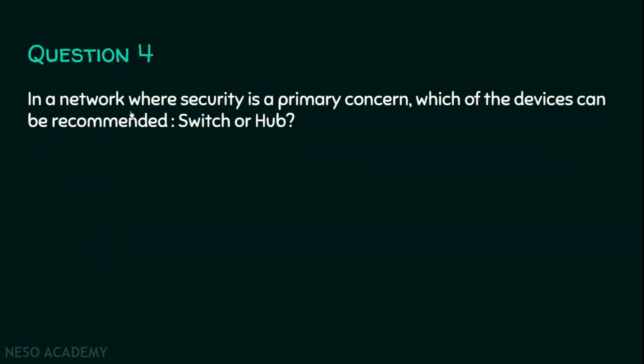Question number four: in a network where security is a primary concern, which of the following devices can be recommended — switch or hub? The answer is switch, because hub always does broadcasting. If a sender sends data, all computers receive it regardless of the intended recipient. Switch sends data to the exact destination using unicasting, but hub always broadcasts, giving room for a malicious person to intercept the data.